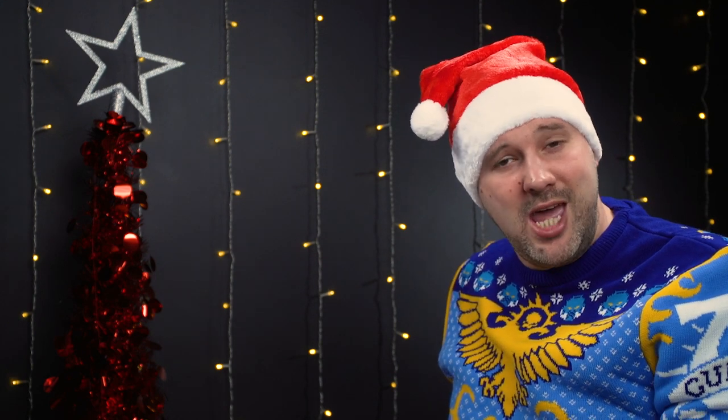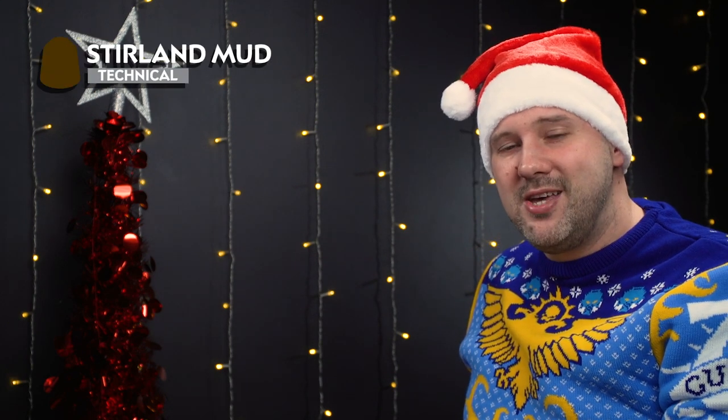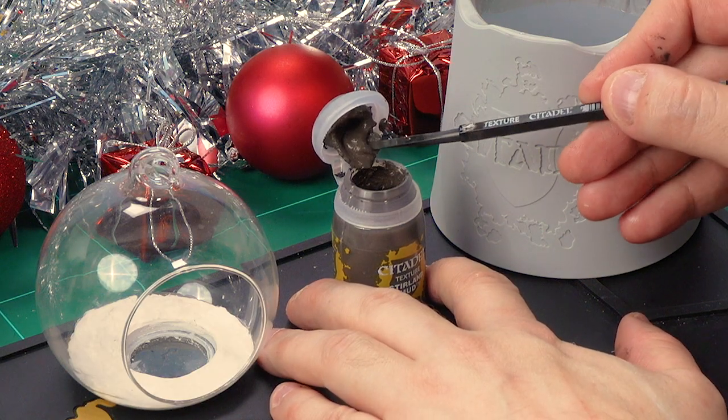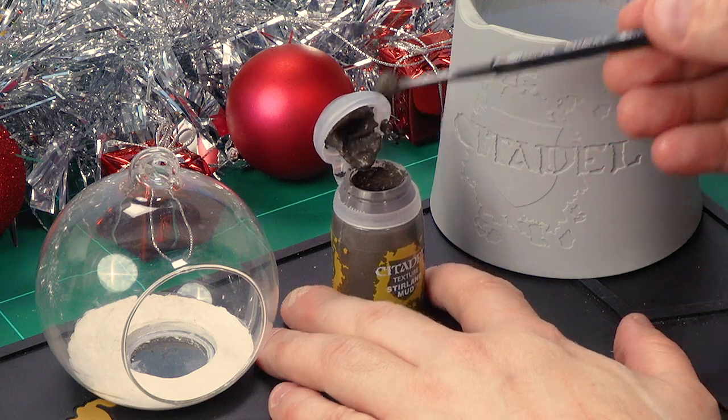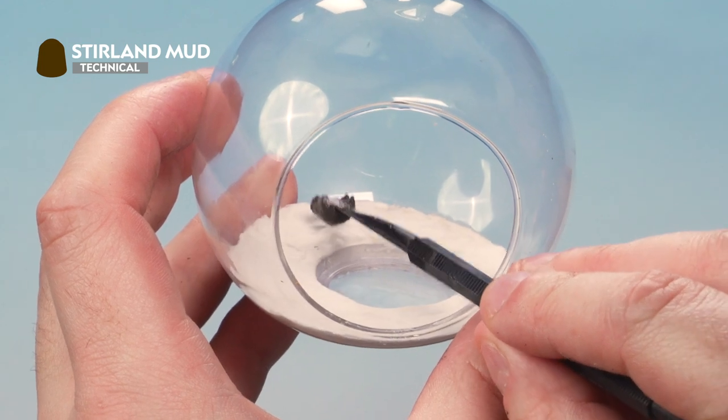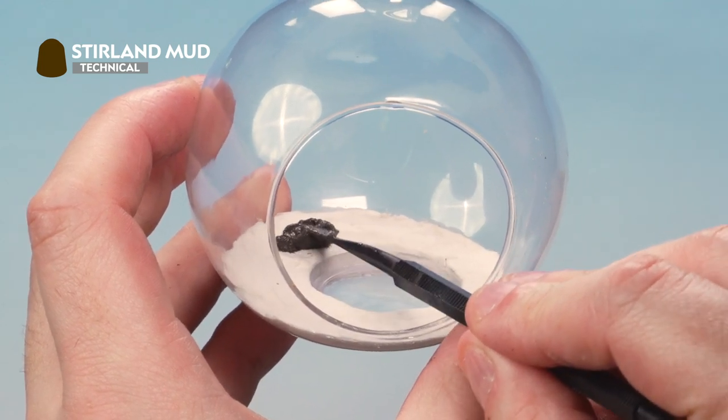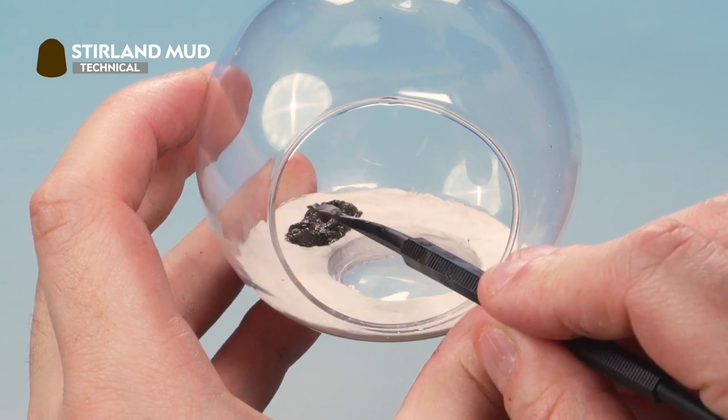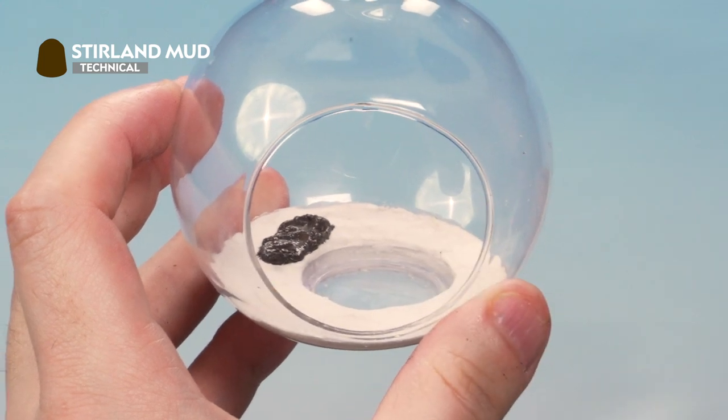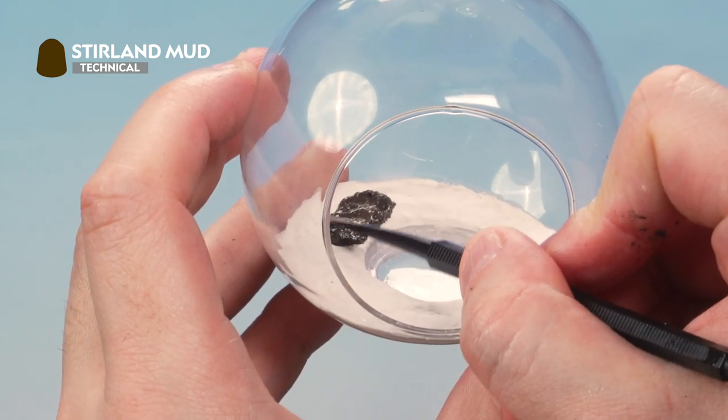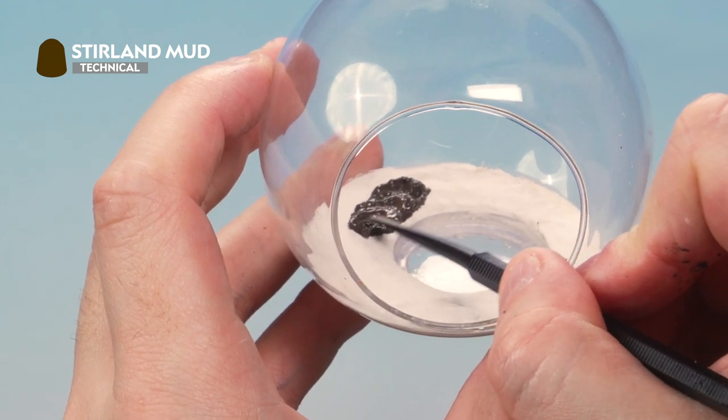Right, up next let's apply some texture to the top of that filler to make it look like ground, and here we'll be using Stirland Mud. For this, grab your texture tool again. Take some Stirland Mud from the pot and apply it onto the top of your texture tool on the fatter of the two ends. Then inside the bauble here we're applying this as you would normally on a base, all around where you've put the filler in. Now be super careful here not to hit the slot or the side of the plastic.